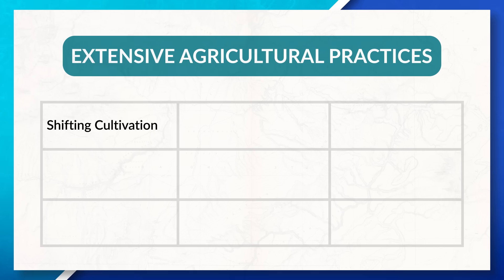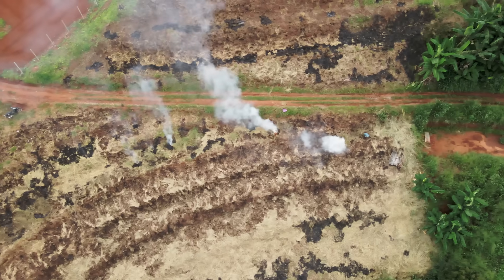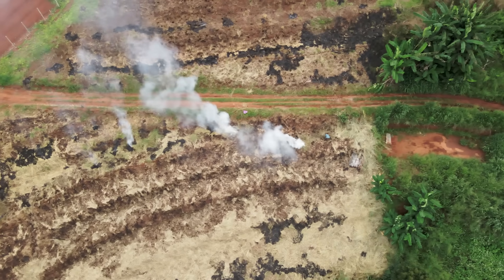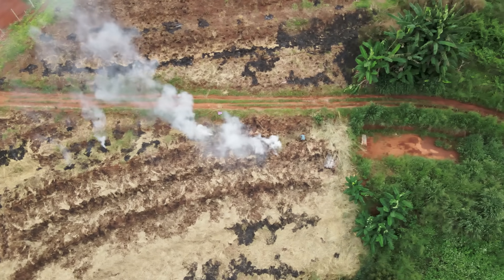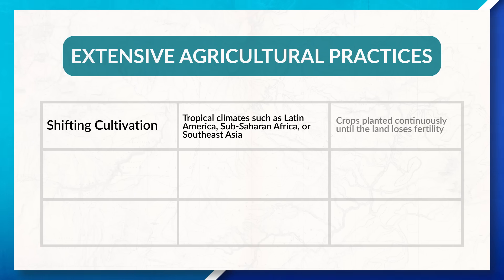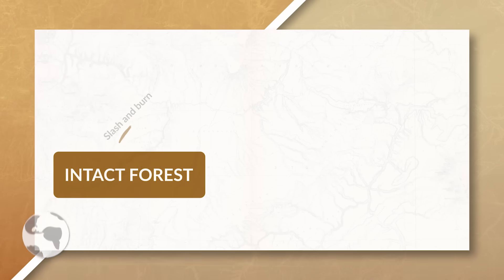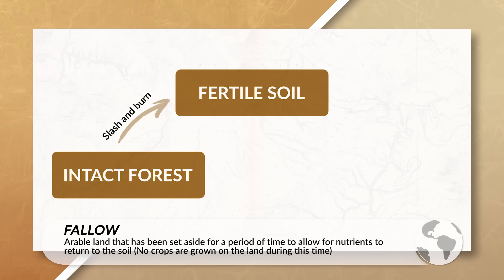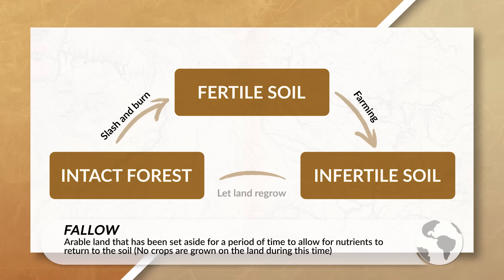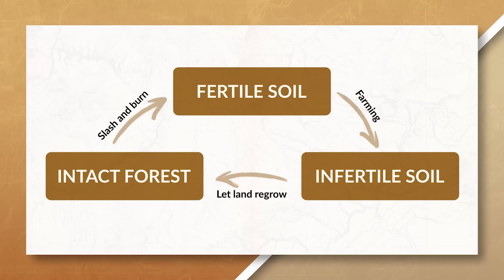Shifting cultivation is often located in tropical climates, such as Latin America, Sub-Saharan Africa, or Southeast Asia. This type of agriculture involves finding a plot of land, typically in a rainforest, and designating it for agricultural use. The land will be cleared and crops will be planted continuously until the land becomes less productive due to a loss of nutrients. After that, the original plot of land is left to fallow — meaning the land is left alone to allow vegetation to regrow and nutrients to return to the soil. A new plot of land will then be identified and the process will repeat.